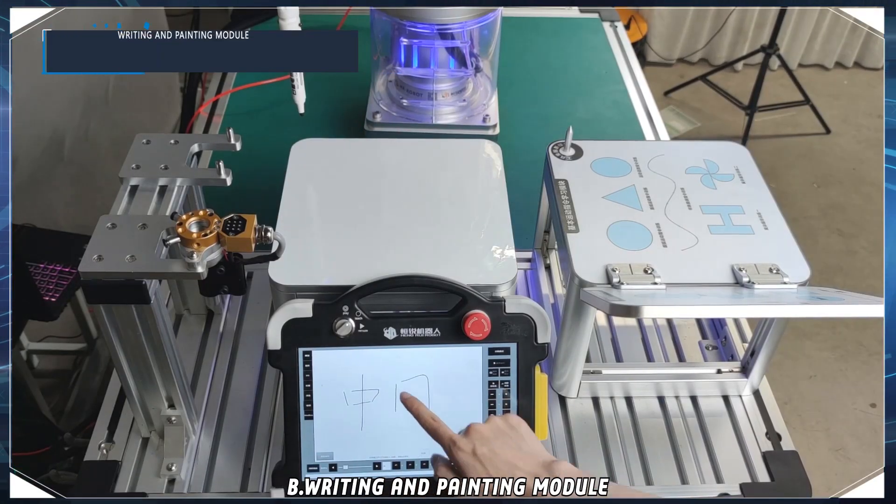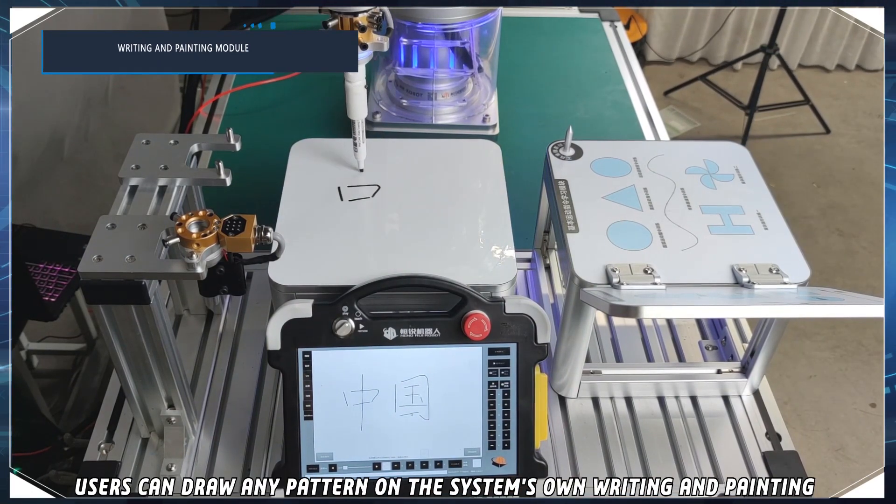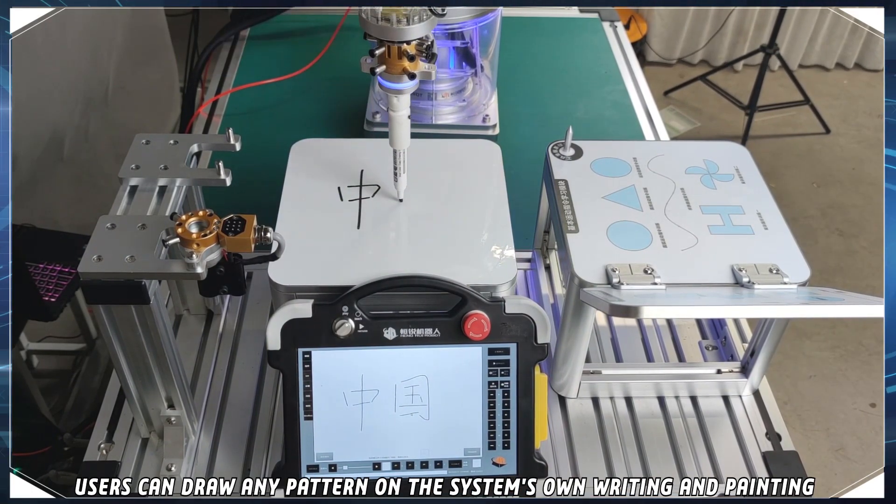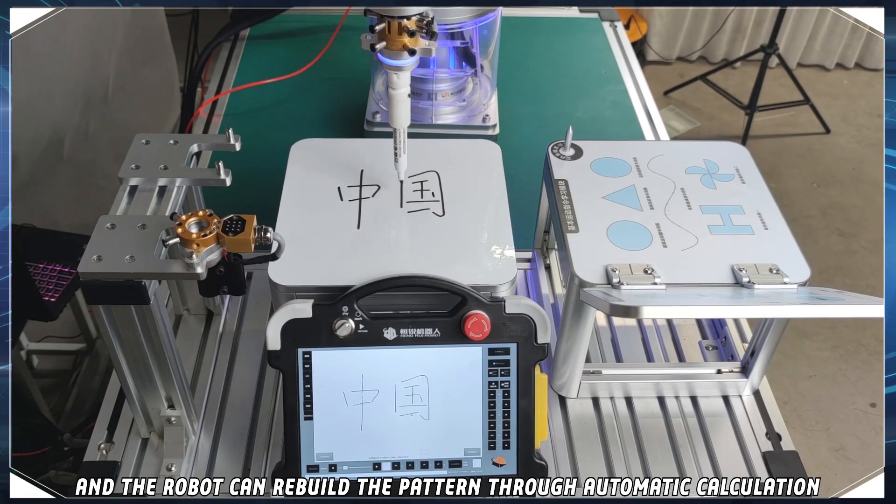The writing and painting module. The module adopts a 260 by 216 square drawing board. Users can draw any pattern on the system's writing and painting interface after marking the workpiece coordinate system on the module, and the robot can rebuild the pattern through automatic calculation.